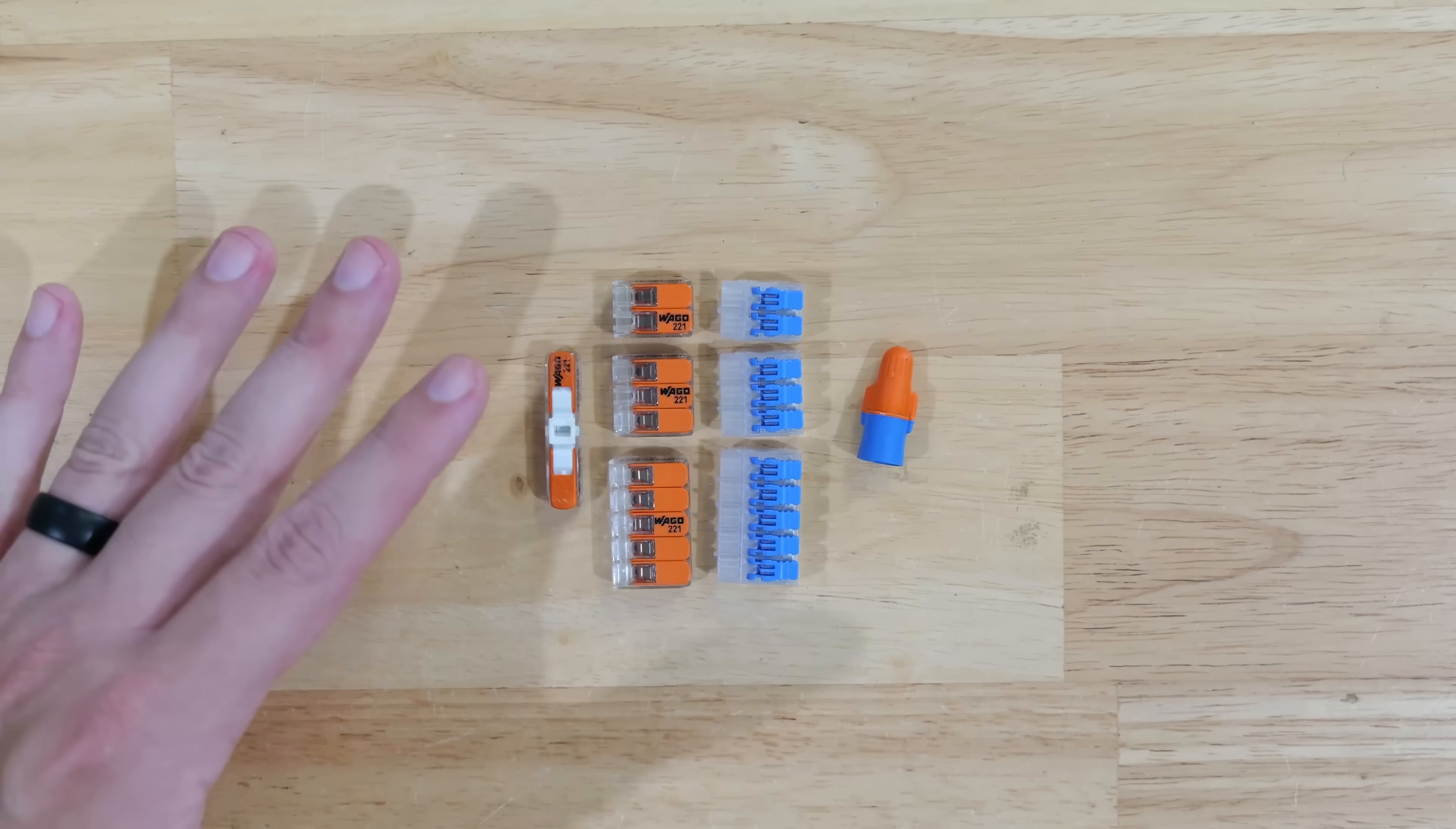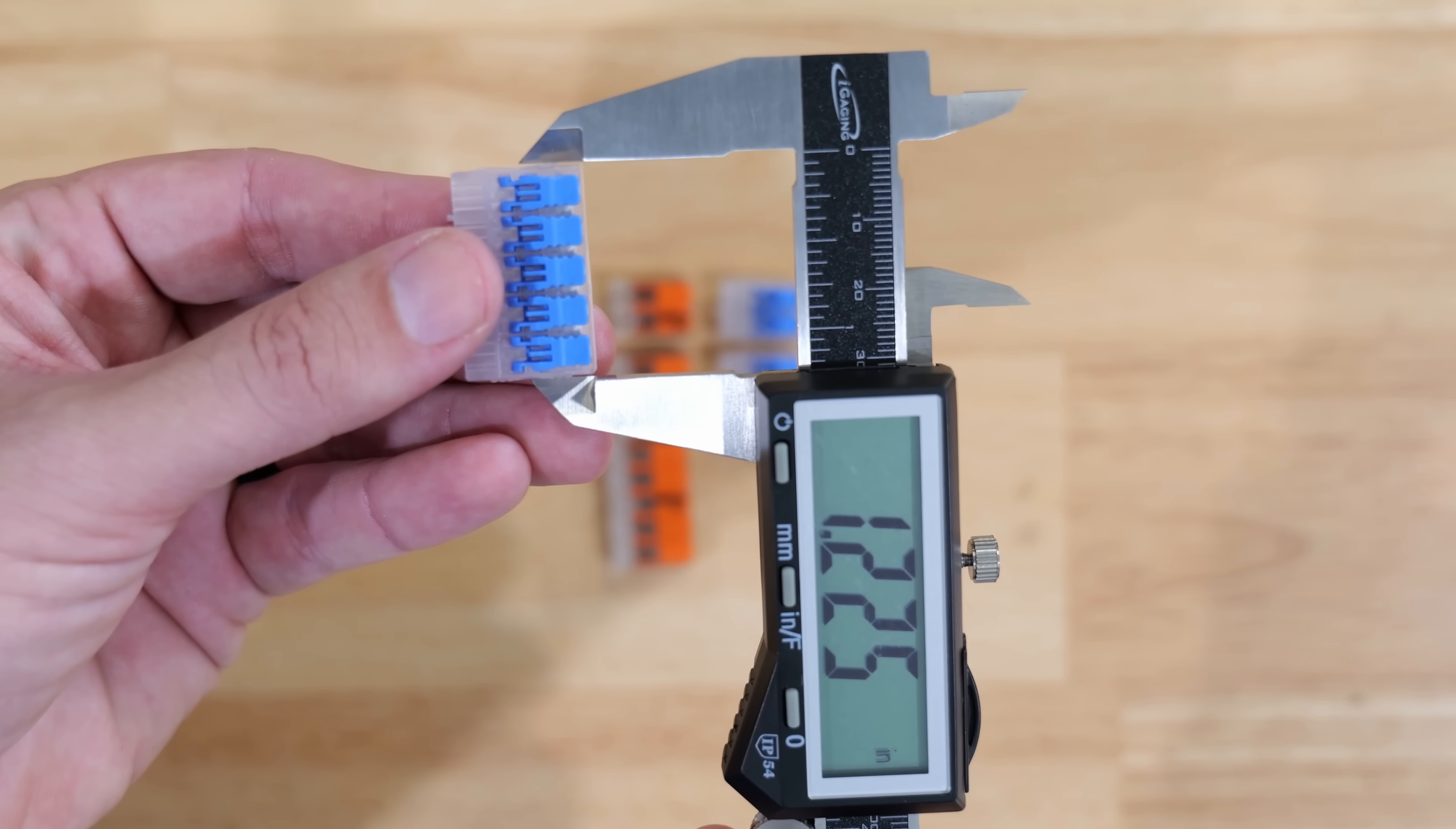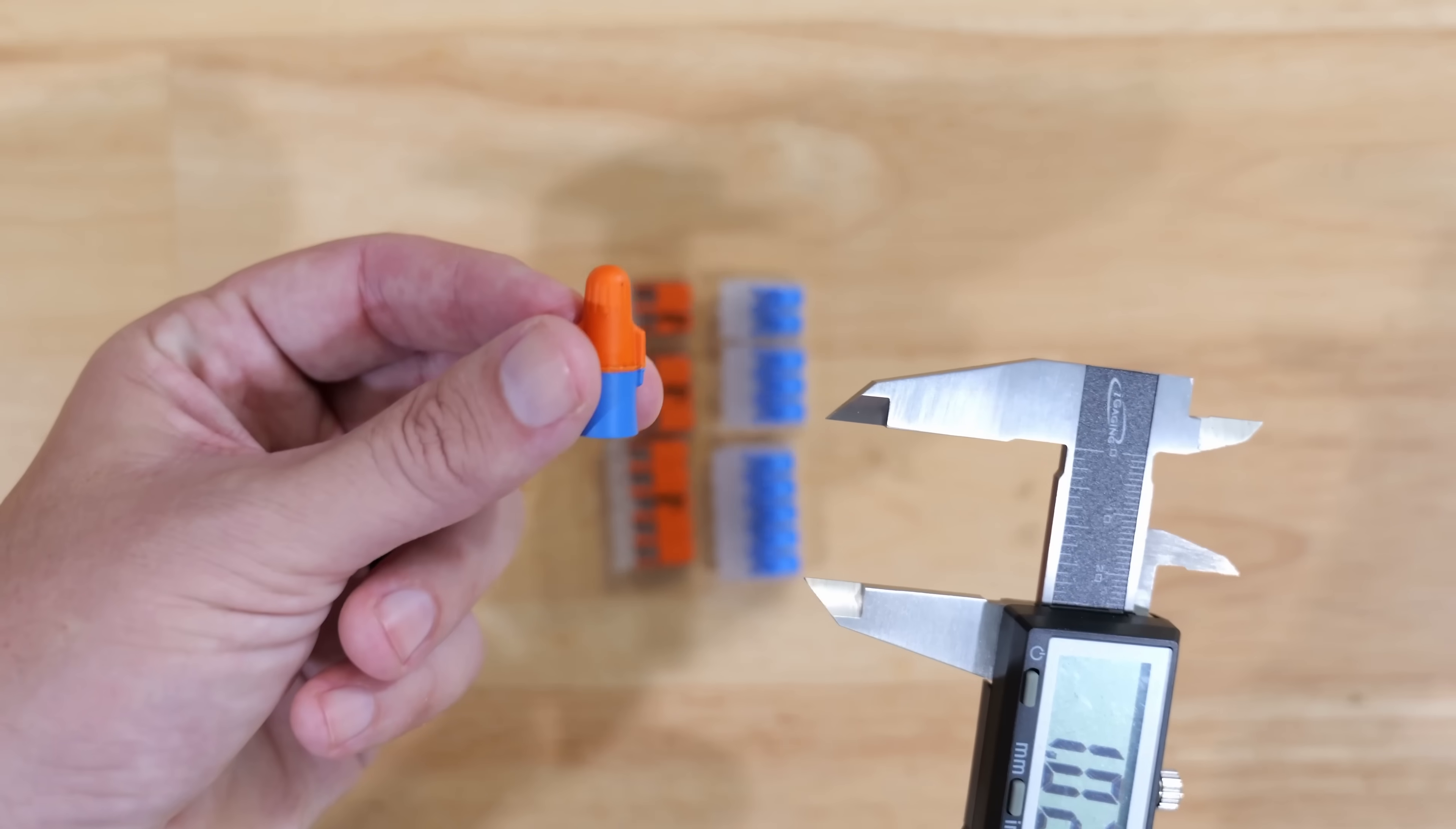One very important factor that a lot of people want to know about when they use different kinds of splicing devices is how much room it's going to take in a box. If we take a look at the 5-port WAGO, we're getting right at 1.17 inches. The Ideal Ensure lever nut is right at 1.225 inches. And the 3M Performance Plus wire nut is right at 1.023.